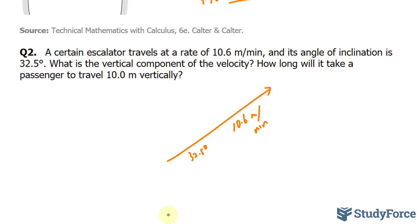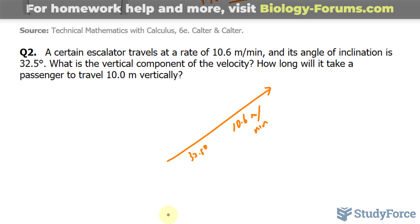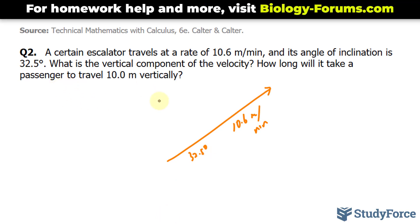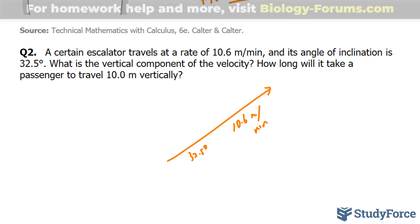What we have to do is find the vertical component. And the reason that's important is so we can answer the next part of the question. To find the vertical component, which is this part, we need to relate the angle opposite and the hypotenuse, which is 10.6. Opposite and hypotenuse is sine.